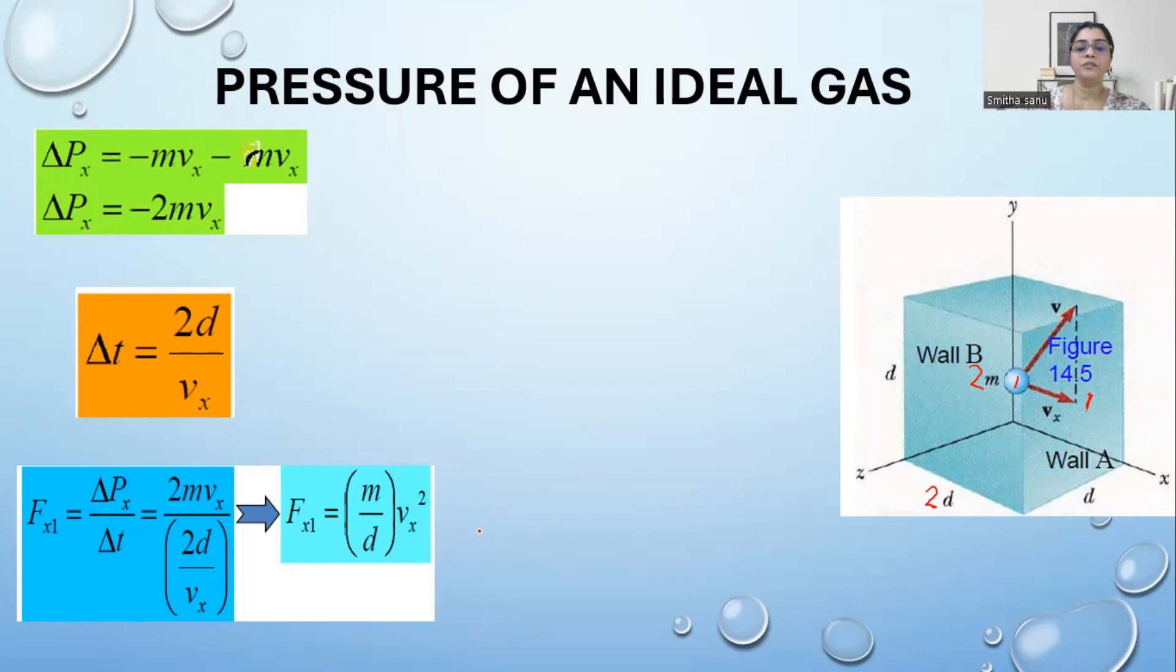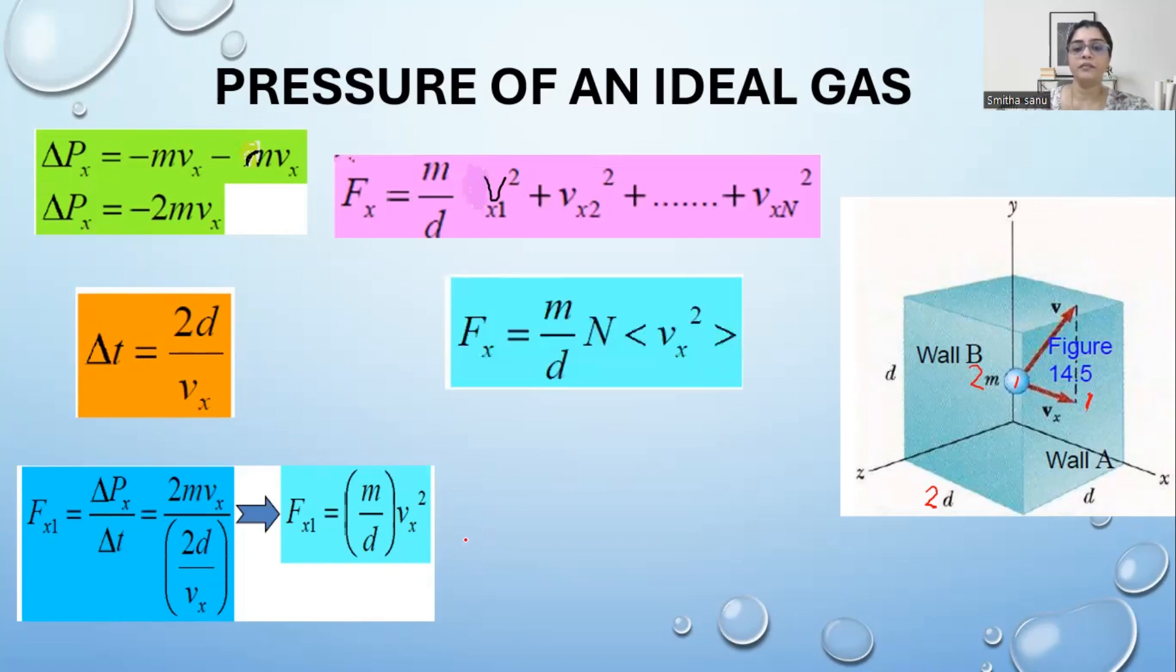Since we know that there are innumerable molecules, let there be n number of molecules where the average velocity is v, then total force will be nmv² over d. This is the force only along x-axis. What about the forces along y and z? If I see the total force, fx is one third of the whole force. So you get the final equation here for the force which is n over 3 times mv² over d.